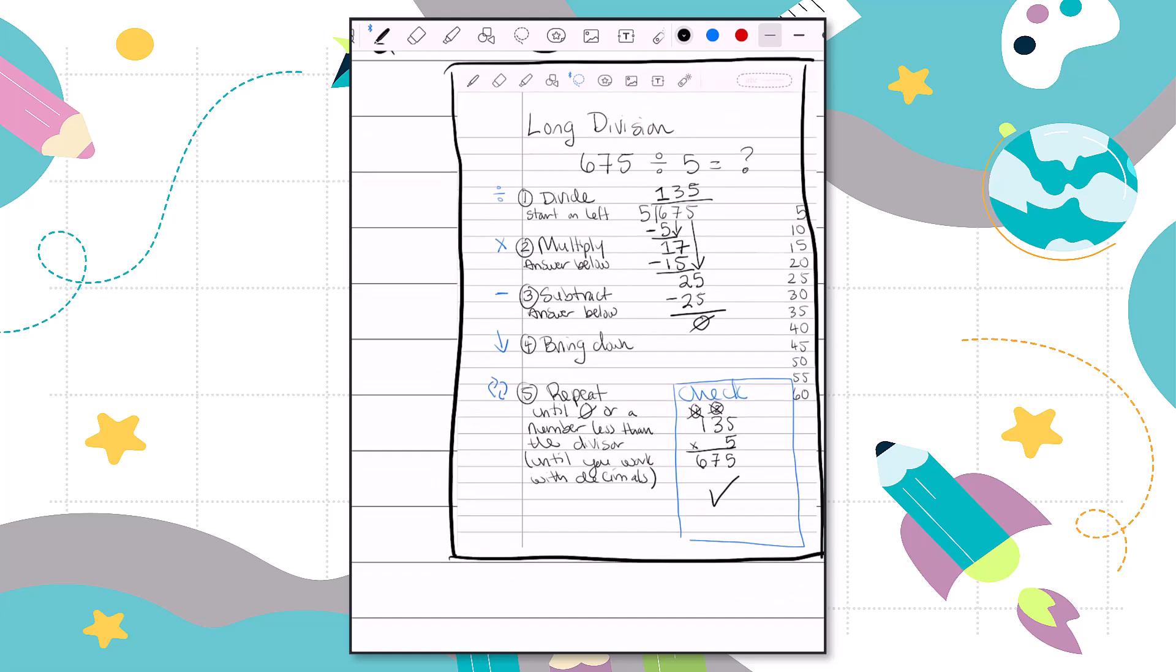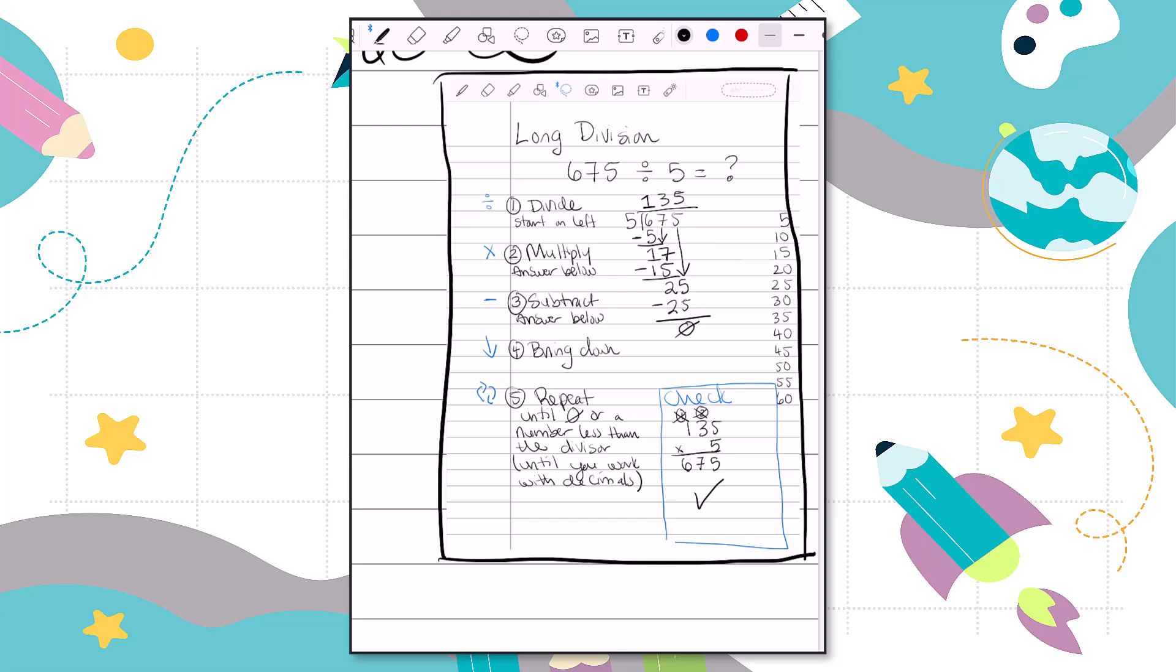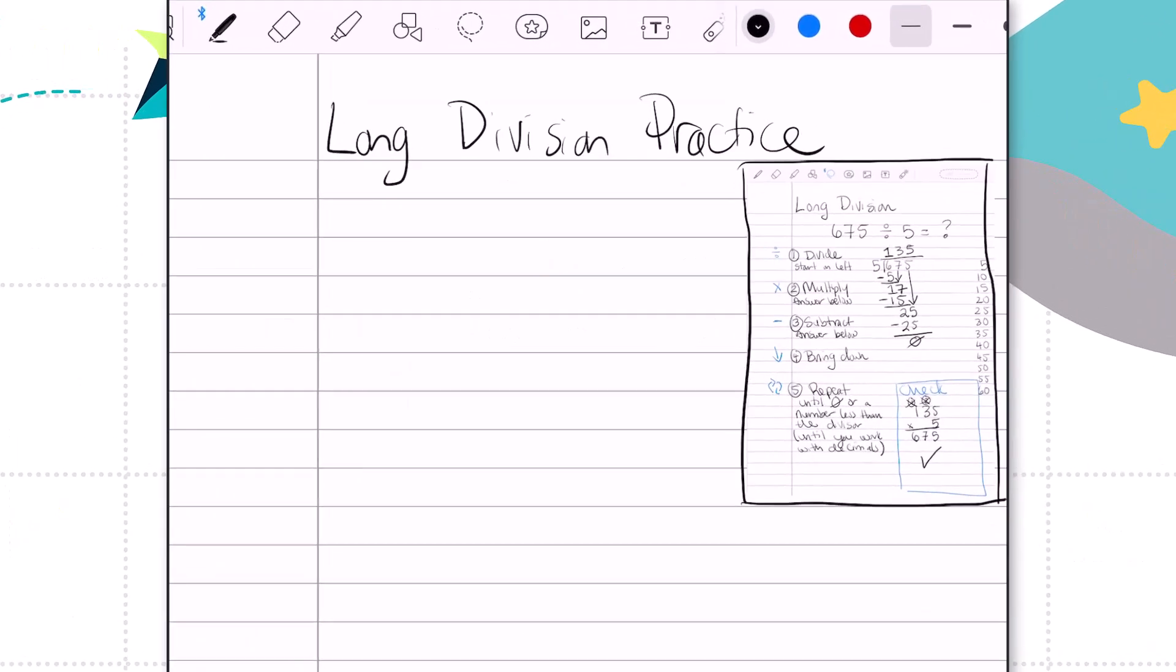Remember that we divide, multiply, subtract, bring down, and repeat. The first problem I'm going to do today is 358 divided by 2. Now I'll start by writing a multiples list off to the side.